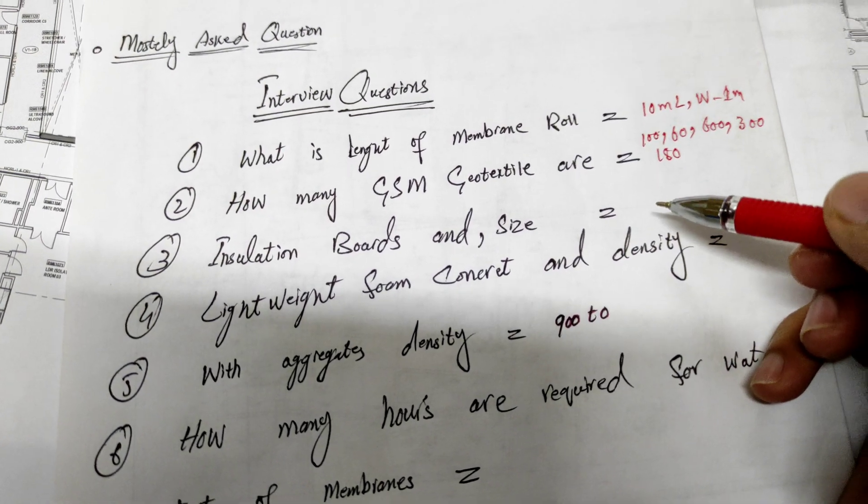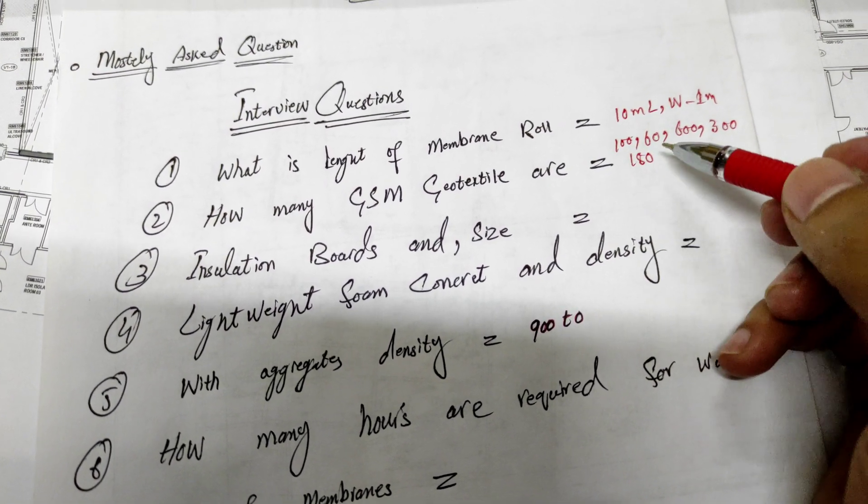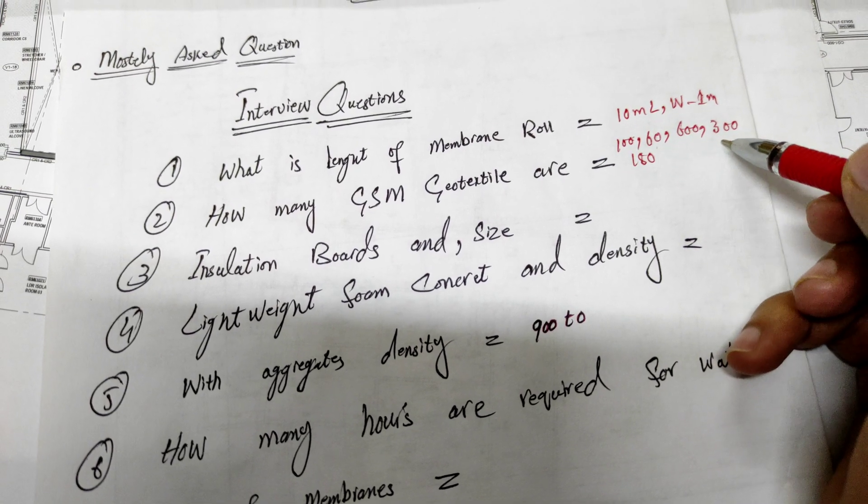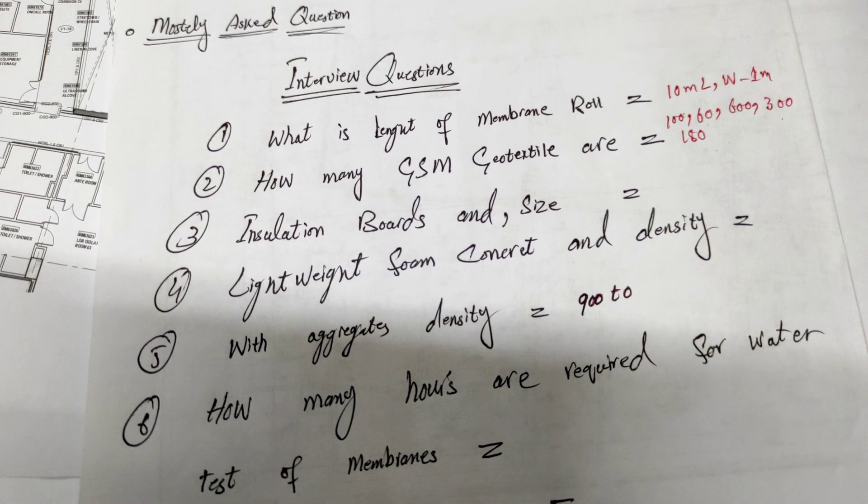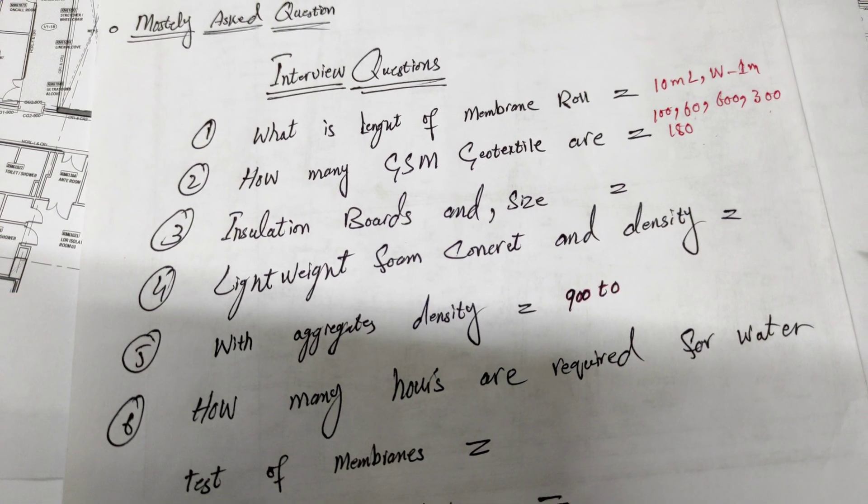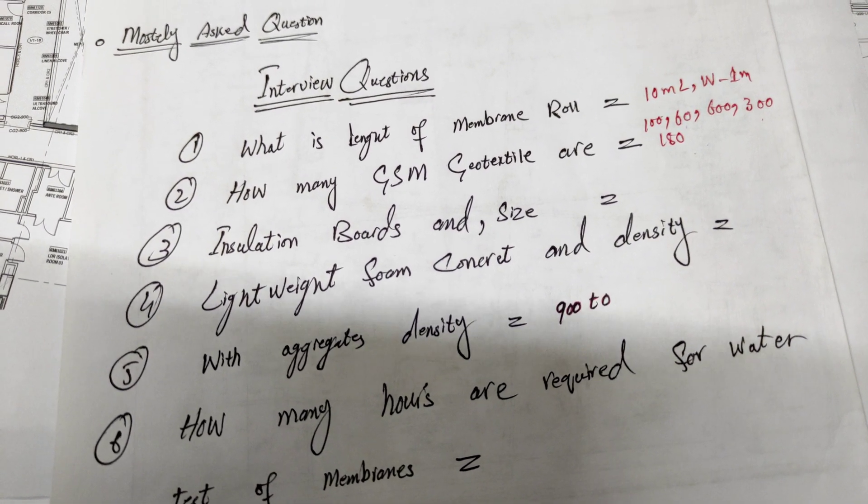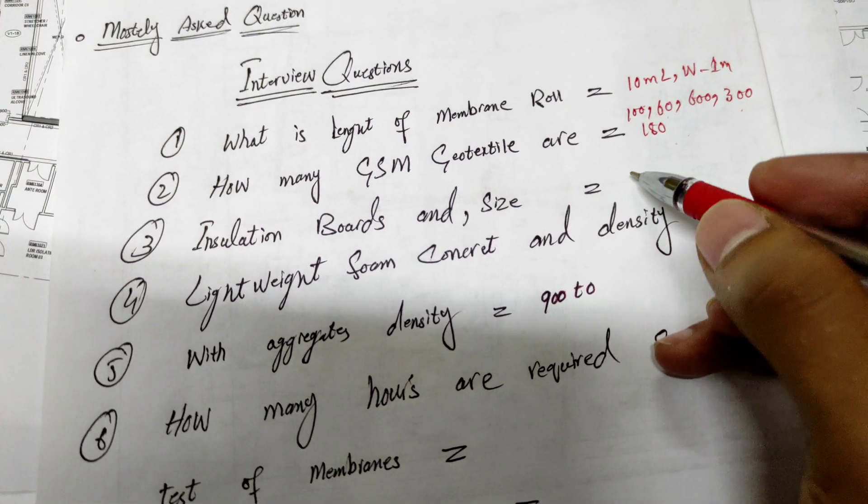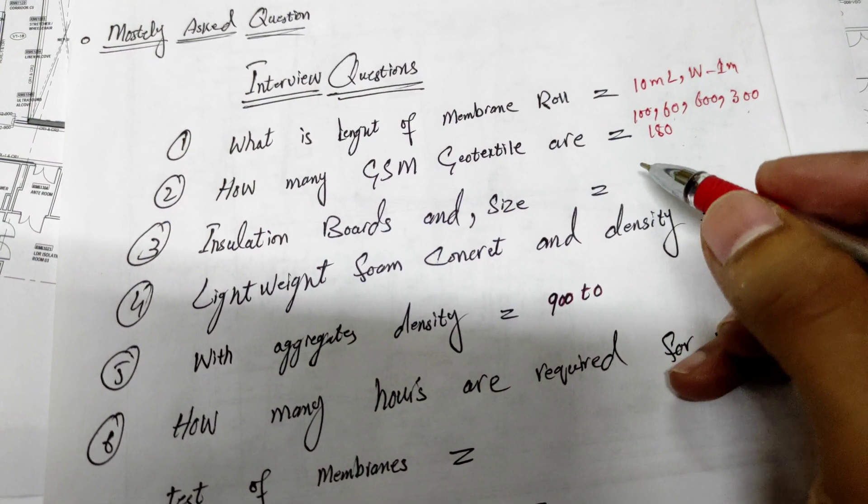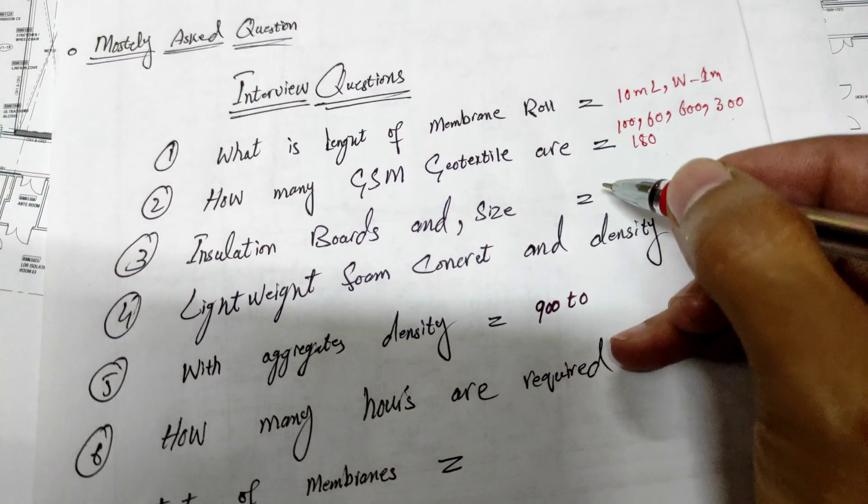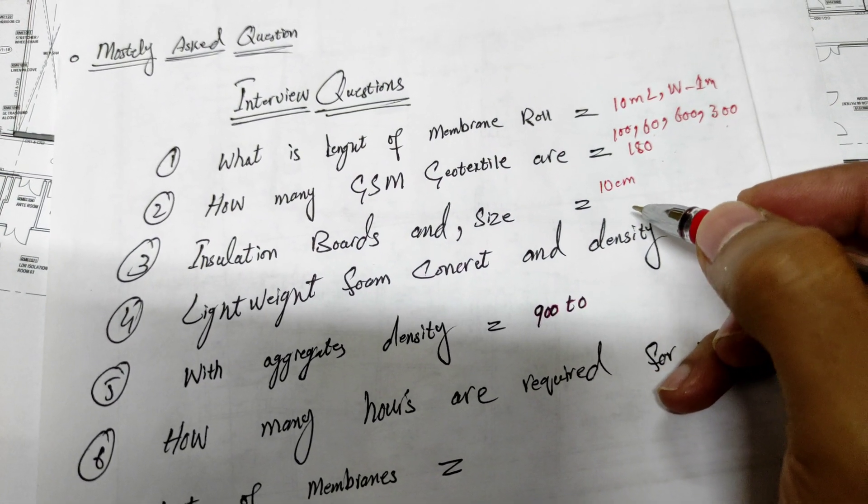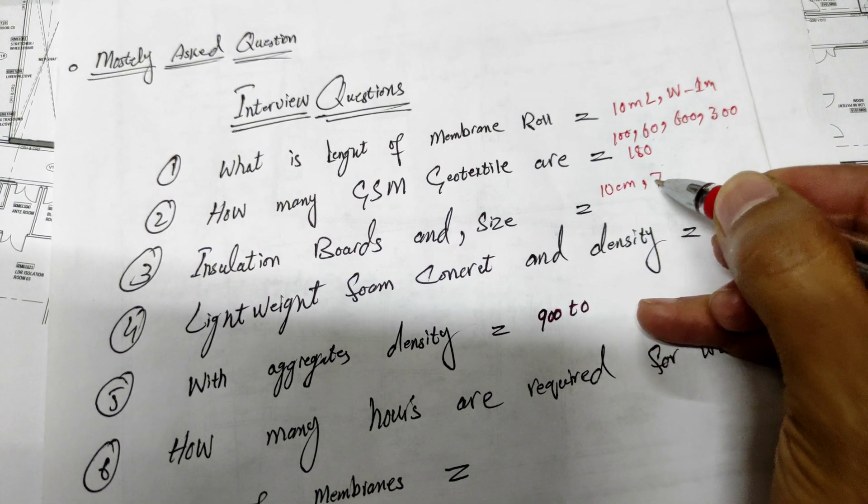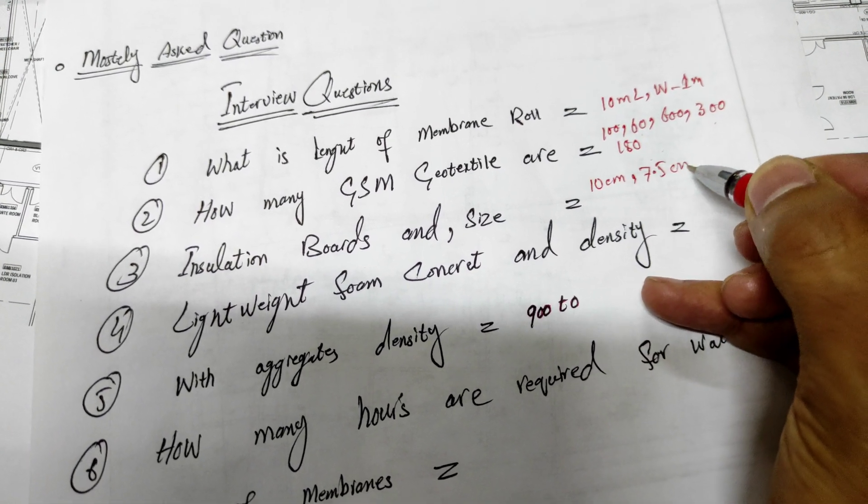In toilets you can use 60 GSM or 300 GSM as per requirement of the site. Third: Insulation boards and size. There are three types of insulation boards and sizes: 10 centimeter, 7.5 centimeter, and 5.5 centimeter.